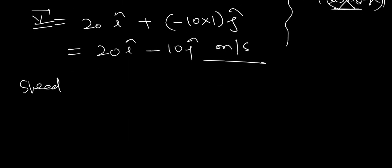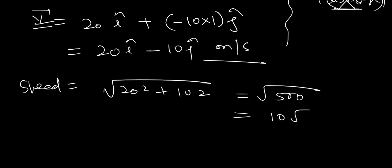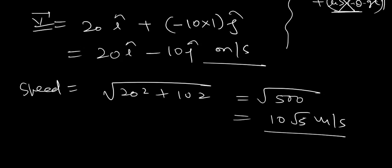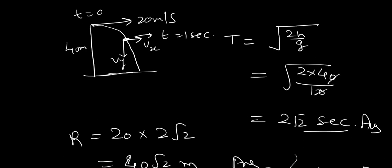Okay, if you ask speed at t equals to 1 second, then what is the answer? Under root of 20 square plus 10 square. Which will be 400 plus 100, 500. And I can say this is 10 root 5 meter per second. So, t equals to 1 second per, the speed of body will be 10 root 5 meter per second.